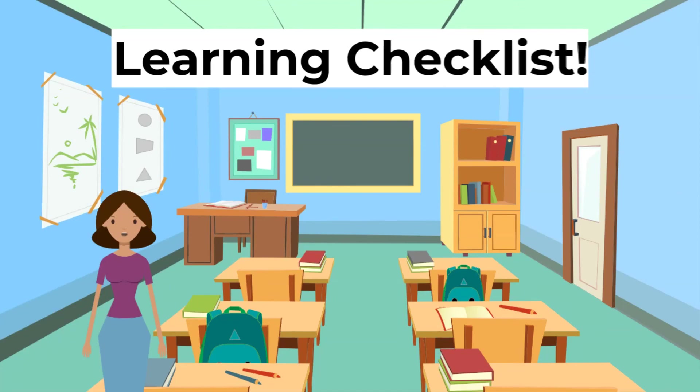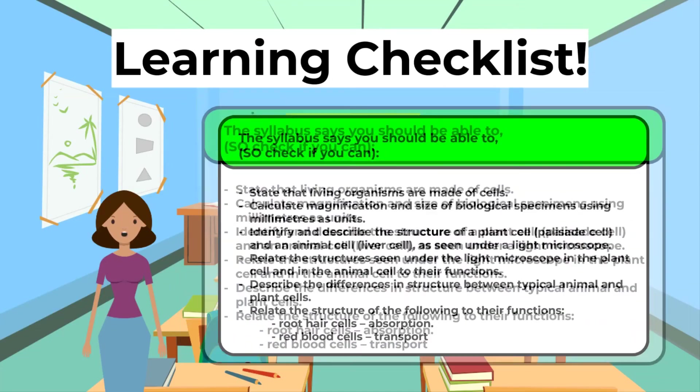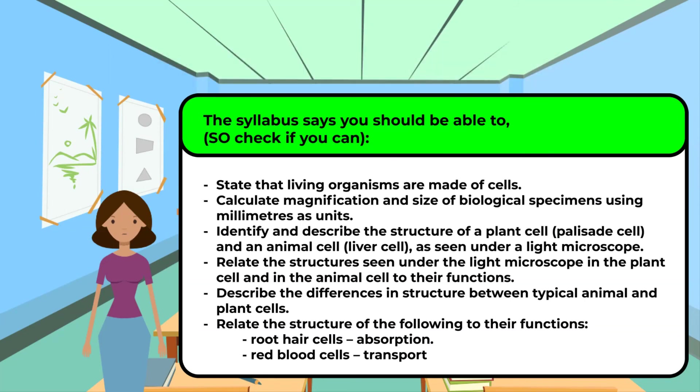As a final check for today, the syllabus says you should be able to the following. 1. State that living organisms are made of cells. 2. Calculate the magnification and size of biological specimens using millimeters as units. 3. Identify and describe the structure of a plant cell, a palisade cell and an animal cell, in this case, a liver cell, as seen under a light microscope.